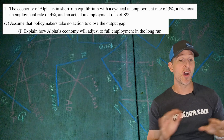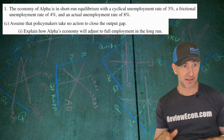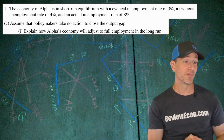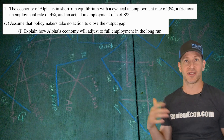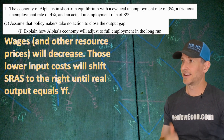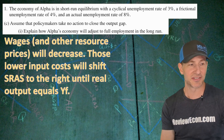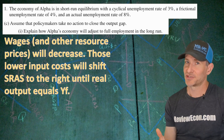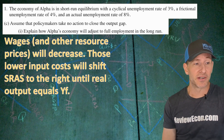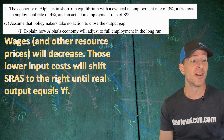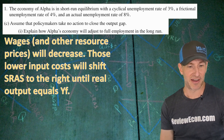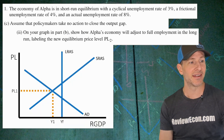On to part C. We're going to assume that policymakers take no action to close the gap, and explain how Alpha's economy will adjust to full employment in the long run. This is our long-run adjustment to full employment with no government intervention. Wages — and potentially other resource prices, but wages should be enough — will decrease. Those lower input costs will shift the short-run aggregate supply curve to the right until real output equals YF, the full employment level of output.